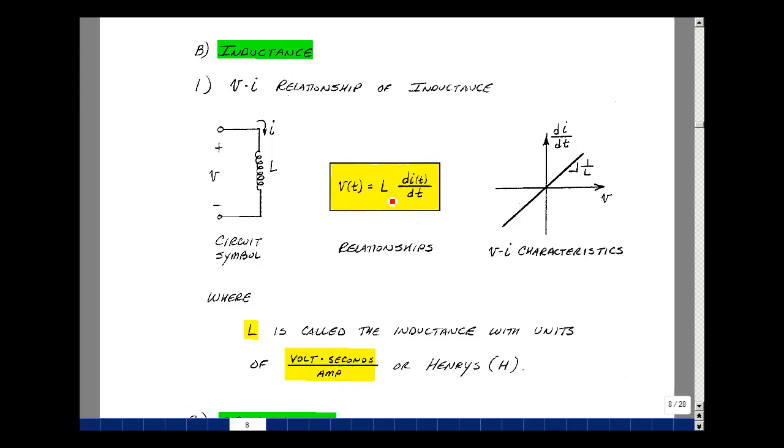This had units of volts seconds per amp. When you multiply these together, you're going to get volts out. That's a mouthful, so it's actually named after Joseph Henry and referred to as a unit of Henry or Henrys, or just the letter H.